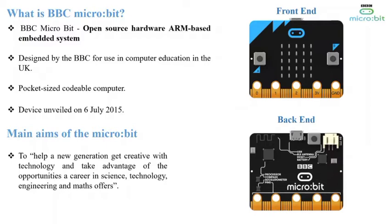Microbit is an open-source hardware and an ARM-based embedded system. The microbit was designed to encourage children to get actively involved in writing software for computers and building new things, rather than being only consumers of media. It was designed to work alongside other systems such as Raspberry Pi, building on BBC's legacy with the BBC Micro for computing in education. The microbit was invented in the early 1980s in the UK, but unveiled only in 2015.